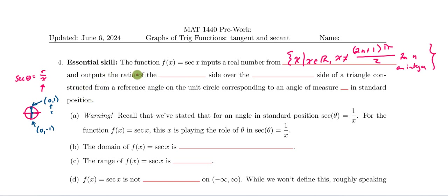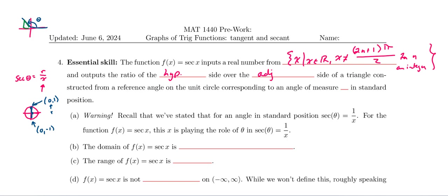The secant outputs the ratio, and thinking about it in terms of reference triangles — which works everywhere except at 90 or 180 degrees — we have the ratio of the hypotenuse over the adjacent side. So for an angle θ with a reference triangle, the secant of θ is the hypotenuse r (which equals 1 on the unit circle) over the adjacent side, the x-coordinate.